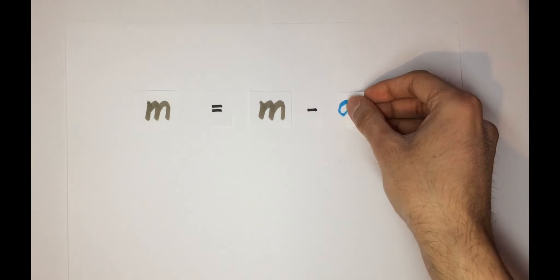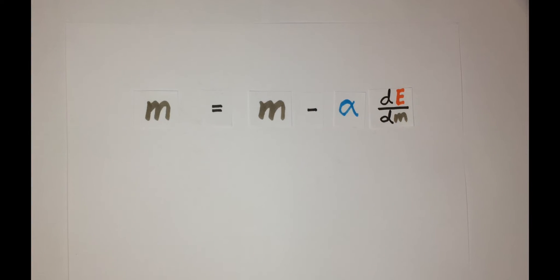So therefore, our update rule is defined as m equals m minus the learning rate alpha times the gradient of the error with respect to m for the weight. And c equals c minus the learning rate times the gradient of the error with respect to the bias.